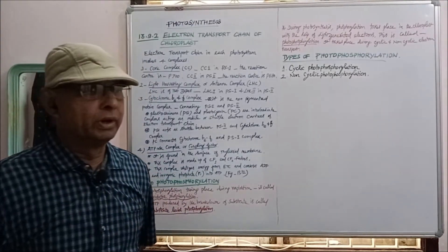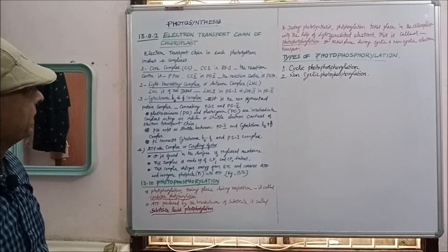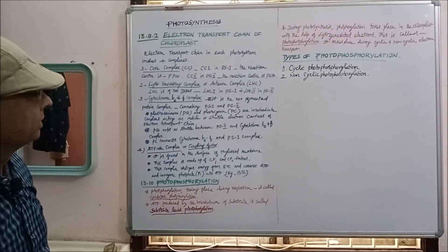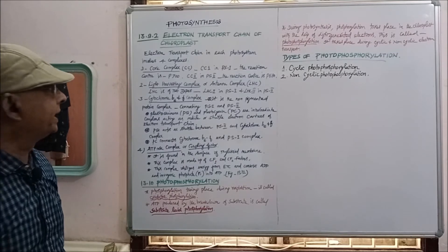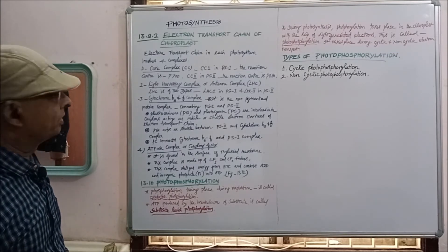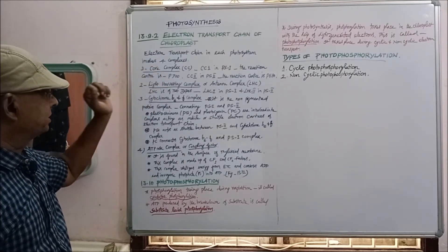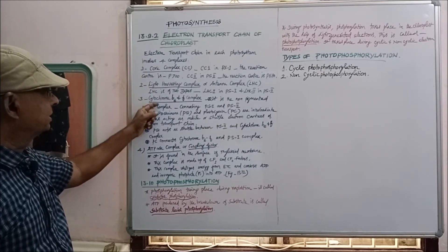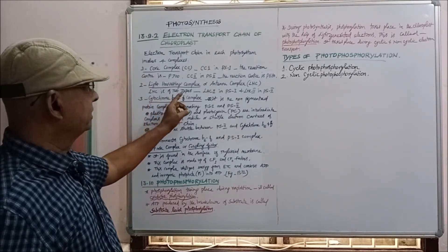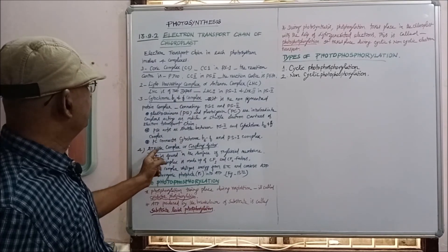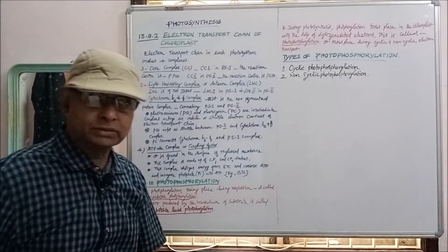In this class we have seen the electron transport chain. The electron transport chain has four complexes: core complex, light harvesting complex, cytochrome B6F complex, and ATPase complex or coupling factors.